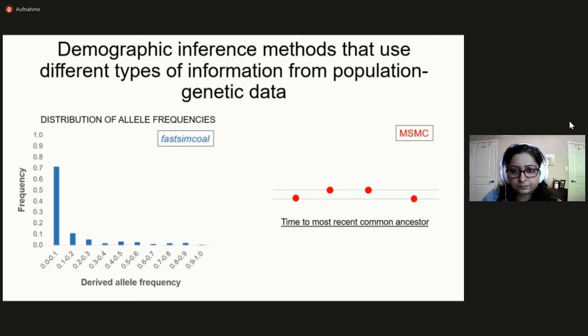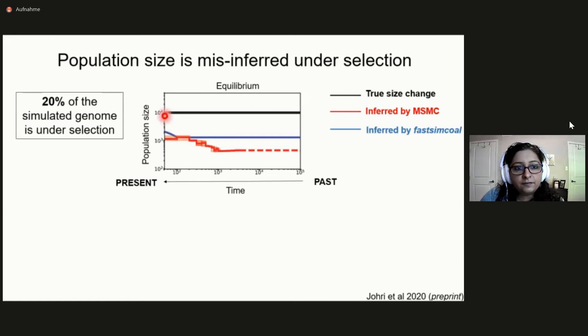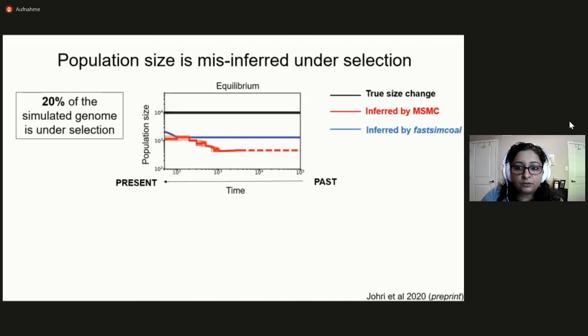The black line shows the true population size that we simulated, with time going from right to left — so it goes backwards. Inferences of population sizes are given in red and blue, with red being MSMC and blue being FAS-SimCole. What you see here is that even when the true model has no size change — that is, it's a constant population — recent growth is inferred by both of these programs. Both methods also underestimate the true population size by an order of magnitude, which is somewhat expected.